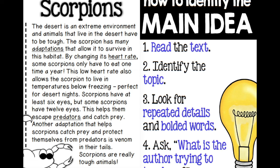Number three, the next thing you're going to look for are repeated details — things that are said over and over. You can find bolded, underlined, or italicized words. Italicized is when they're a little slanted. And then number four, you can ask: what is the author trying to teach me? When we're reading nonfiction, most of the time it's for information — it's informative. So when you're done, you have to say, what did I learn from that? So let's take a look at scorpions on the left, and I'll keep the four steps on the right side.